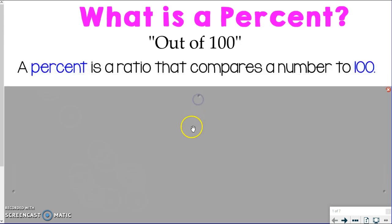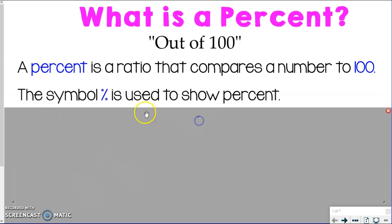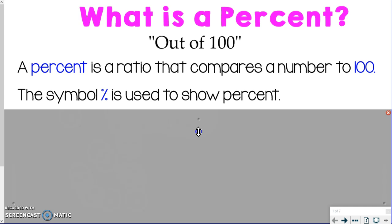So then our first blank is: a percent is a ratio that compares a number to 100. Again, that 'out of 100' is so important. So make sure you get your blanks filled in. This symbol right here with the slash line with the two dots, that's used to show percent. I'm sure you've seen that before, but I just want to make sure we know that's the symbol that shows a percent. And percents can be used to easily compare values, so make sure you write 'compare values' in your blanks there.